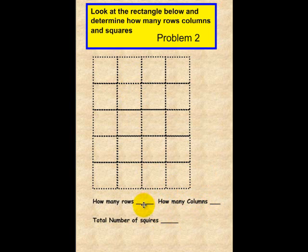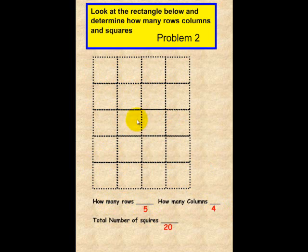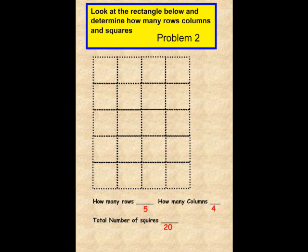Okay, let's see what we have as an answer. We have 5 rows and 4 columns. So 4 times 5 is 20. If you count up all the squares, your answer is 20. If you would, please have another student come up for problem 3, and please erase the board.